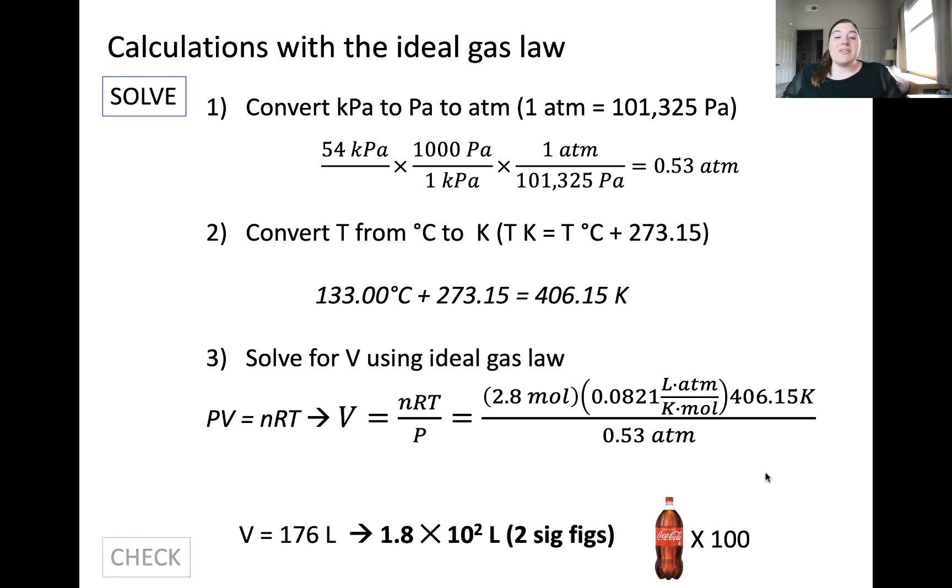Now, it can be difficult to check ideal gas problems in terms of, does this volume make rational sense? But what you should check with every ideal gas problem that you do is if the units cancel. So moles will cancel with the denominator of moles in the ideal gas constant, Kelvin, same, and atmosphere, since it's in the denominator of this entire expression, will cancel with the numerator here, leaving us with a unit of liters. That's what we would expect. Checking units is so important, I cannot emphasize it enough.